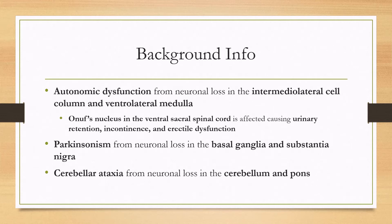Neuron loss in different parts of the brain or spinal cord can cause the different symptoms. Autonomic dysfunction is fairly prominent and arises from neuron loss in the intermediolateral cell column and the ventrolateral medulla. Commonly, you can see problems with bladder functions such as retention or incontinence, as well as erectile dysfunction, thought to arise from dysfunction in Onuf's nucleus in the ventral sacral spinal cord. Parkinsonism can be observed due to neuron loss in the basal ganglia and substantia nigra, and cerebellar ataxia seems to arise from neuron loss in the cerebellum and pons.